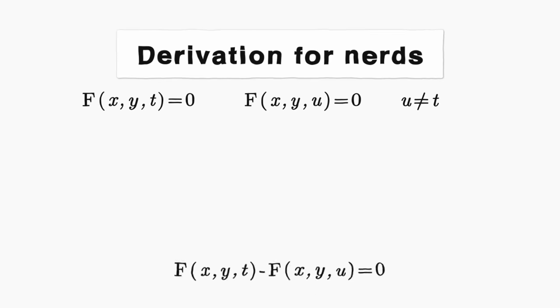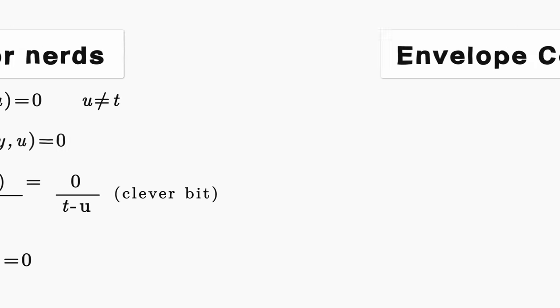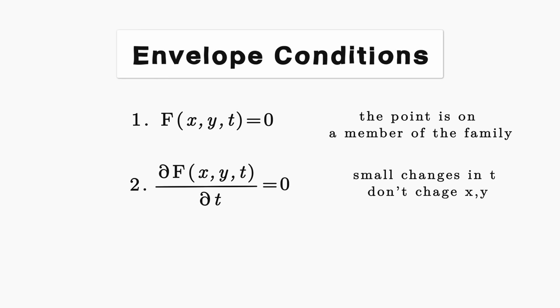The math backs us up on this too. We can take two curves with parameters t and u, rearrange their definition, then take the limit as u approaches t, and we see the definition of the partial derivative. This is the mechanism we can use to mathematically define and calculate the envelope. You may notice that the partial derivative expression is underspecified. It is an expression of t and x and y. So we need two things. The envelope is the curve that satisfies both f equals zero, which is saying it must be on a member of the family of curves, and the partial derivative of f with respect to t is equal to zero, as we just derived. We call these the envelope conditions, the conditions needed for a point to be in the envelope.